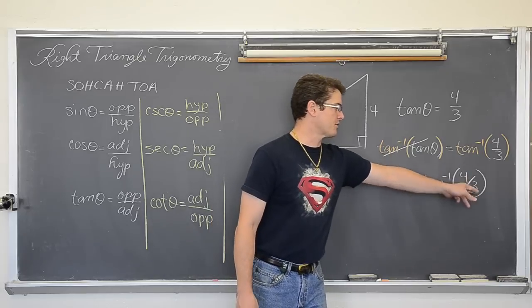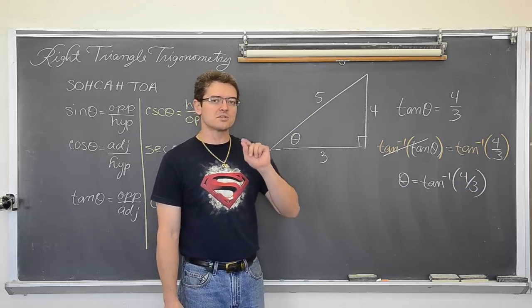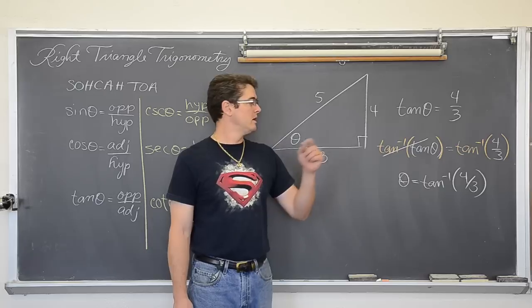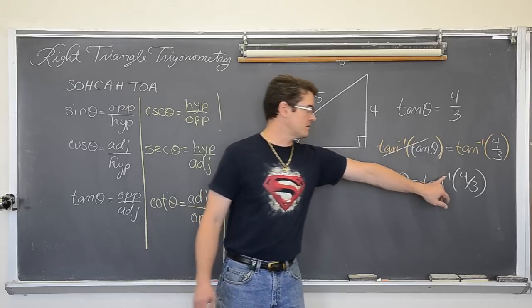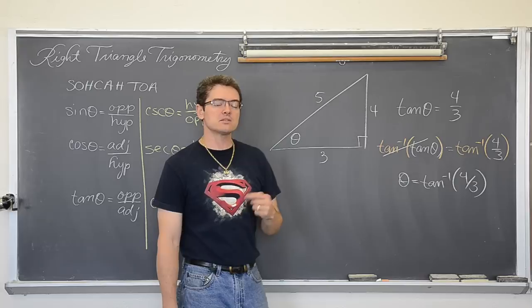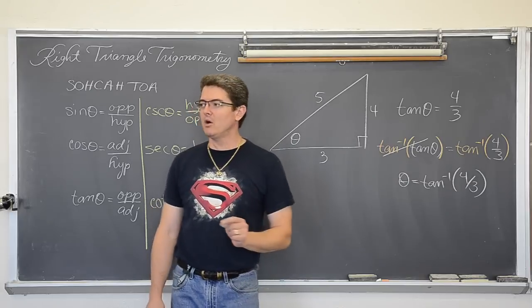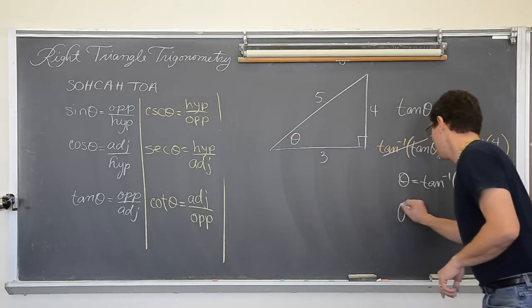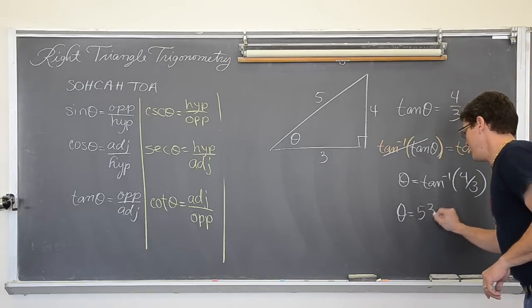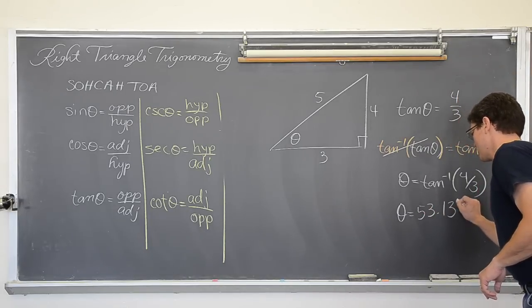So the inverse tangent of 4 thirds, just type it into your calculator, second or inverse, or maybe control, tangent. Look for that little negative one as an exponent and type it in your calculator. If you are in degree mode, you are going to get theta is equal to 53.13 degrees.